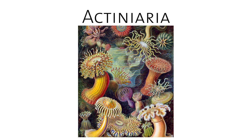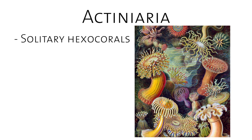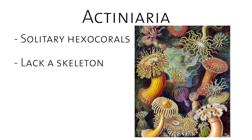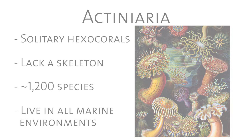Sea anemones are those that belong to the order Actiniaria — that's the scientific name for them. They are defined as solitary hexacorals that don't have skeletons. There are around 1,200 species, and they live in every marine environment — from really shallow water to the deepest trenches, some 10 kilometers below the surface. They can also live in the ice.